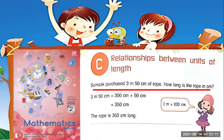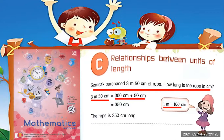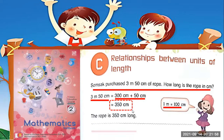When we say 1m, 1m is equal to 100cm. So for 3m and 50cm: 3m becomes 300cm, plus 50cm. So 300cm plus 50cm is equal to 350cm. Don't forget that 1m is equal to 100cm, so 3m equals 300cm. Therefore, 300cm plus 50cm equals 350cm — the rope is 350cm long.